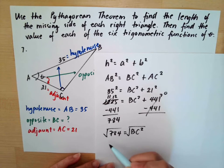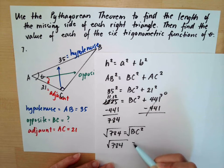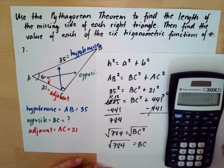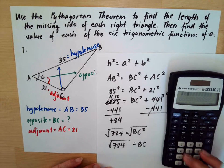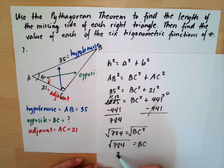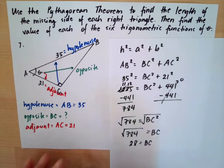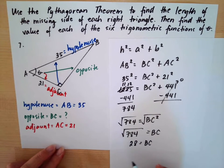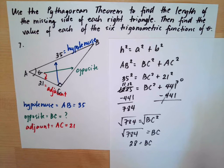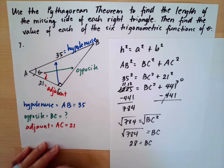Taking the square root of both sides, the square root of 784 equals 28, so BC equals 28. This should technically be positive and negative, but since this is not in the coordinate plane we take the positive value. If it were in the x-y coordinate plane, the sign would depend on which quadrant the angle is located in.